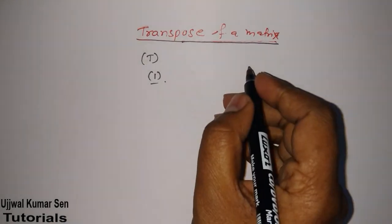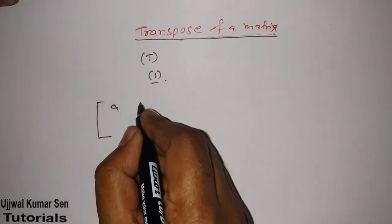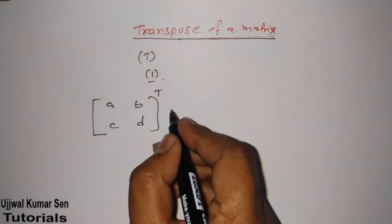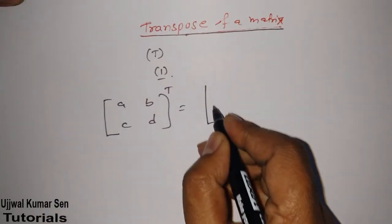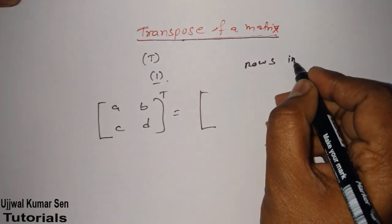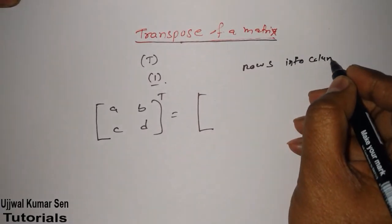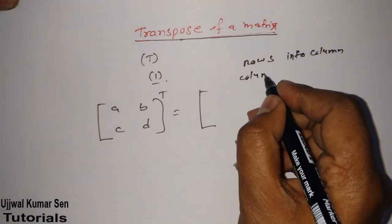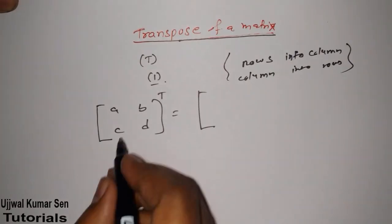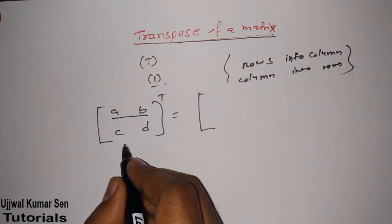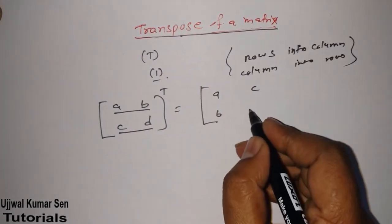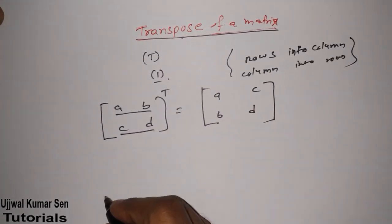If we do the transpose of any matrix — suppose we have a matrix with elements A, B, C, D — and we do the transpose of this matrix, then what will happen? Its rows will be converted into columns. So here rows A, B and C, D: A, B will become a column and C, D will become a column.